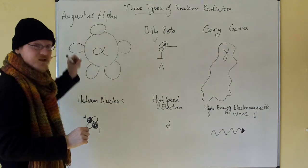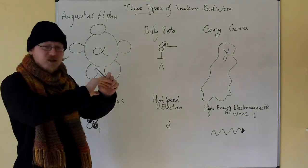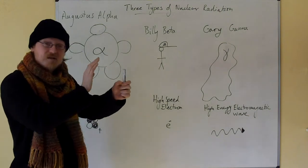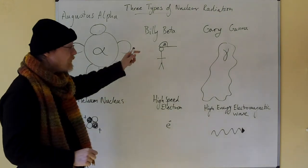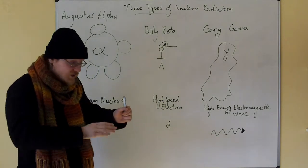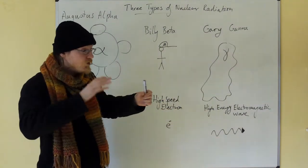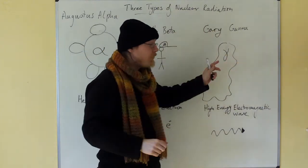So once again, Augustus Alpha trying to get through the crowd just makes a huge mess, crashes everything for a short distance, but doesn't penetrate very far. Then Billy Beta gets a bit further until he gets kicked in the head because he can weave in and out. And finally Gary Gamma, who is a ghost, just goes straight through everything and is the most penetrating.